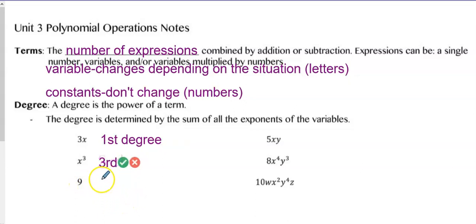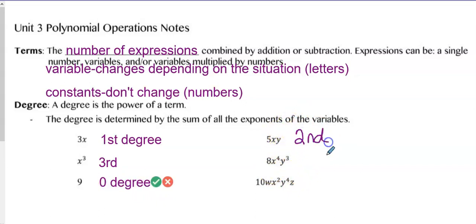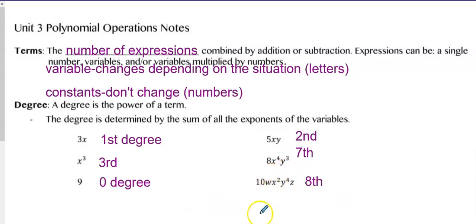The number 9 would be a zero degree term because it's a constant — it's like nine times X to the zero, which is nine times one. And 5XY has an X and a Y, both to the first degree, so this would be a second degree term. Then something like the fourth plus the third power of W would be an eighth degree term. You just count up the exponents and add them together.